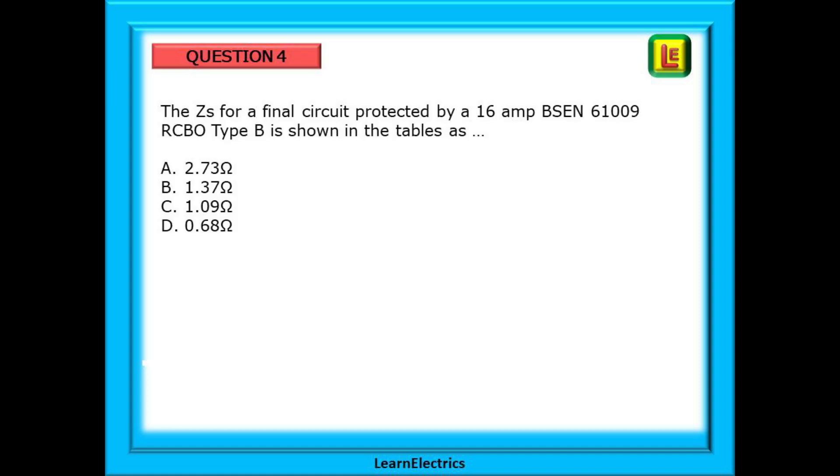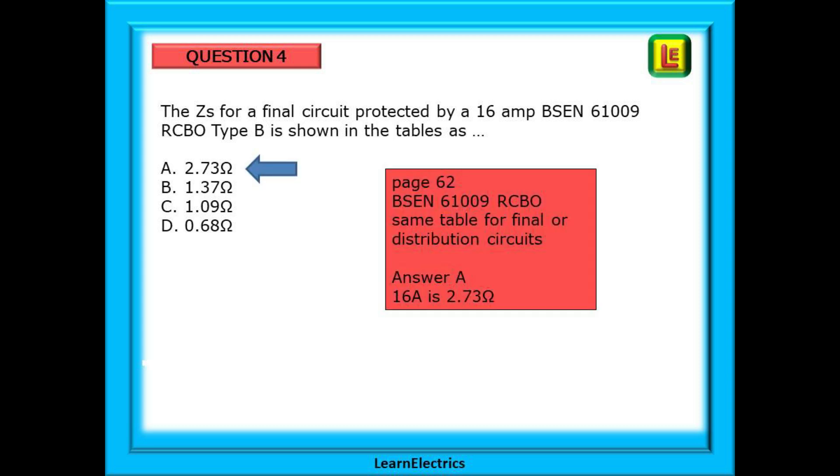Now, question 4. The question asks: the ZS for a final circuit protected by a 16-amp BS EN 61009-RCBO type B is shown in the tables as... Again, pause the video, find the answer and continue. This time, it is answer A, 2.73 ohms.